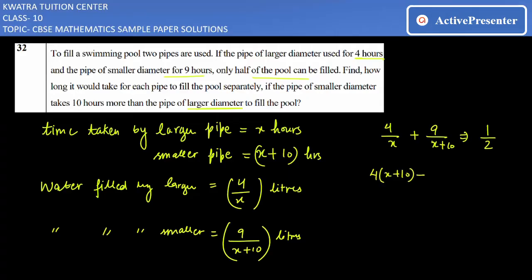Now we'll be forming the equation out of it. 4 will be multiplied by (x + 10) and 9 will be multiplied by x only, and in the denominator you have x and (x + 10), equals half.